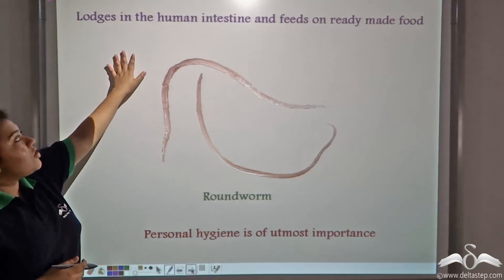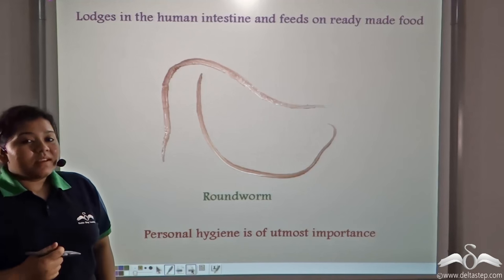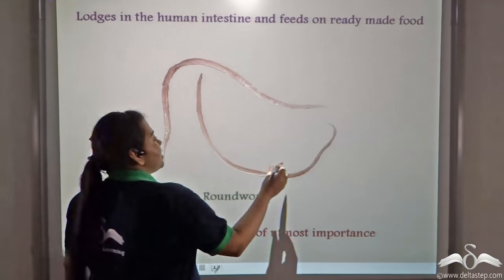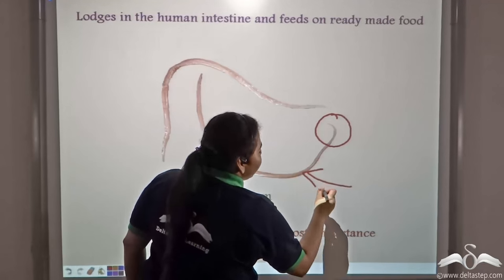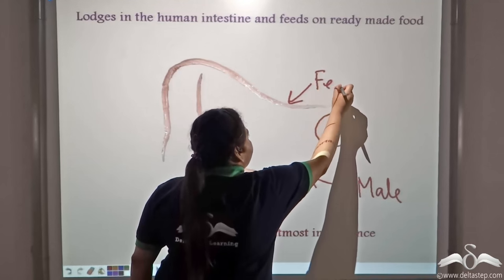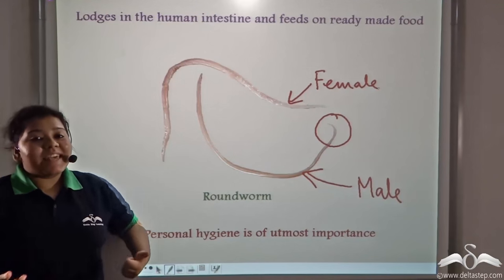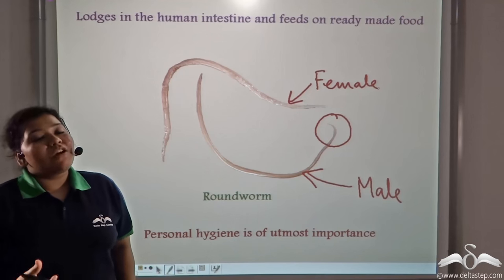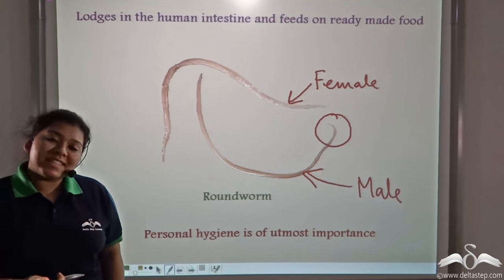The roundworm lodges itself in the human intestine and feeds on ready-made food. The female worm can be identified by the absence of the hook that is present only in male worms. The female worm lays millions of eggs in the intestine, which are passed out through feces and reach the soil due to improper sanitation.